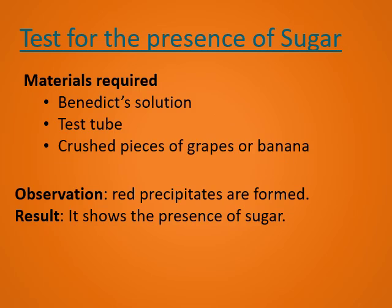Let's test for the presence of sugar. Materials required: Benedict's solution, a test tube, and crushed pieces of grapes or banana. Procedure: take a test tube, add the crushed pieces of grapes or banana in it, add a few drops of Benedict's solution, and heat the test tube. After some time, you will observe brick-red precipitates forming. This shows the presence of sugar in the given food sample.